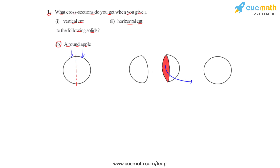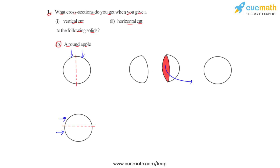If we cut the same round apple horizontally, it is again divided into two parts and the cross section again represents a circle. So whether we give a vertical or a horizontal cut to this round apple, we get the same cross section — a circle.